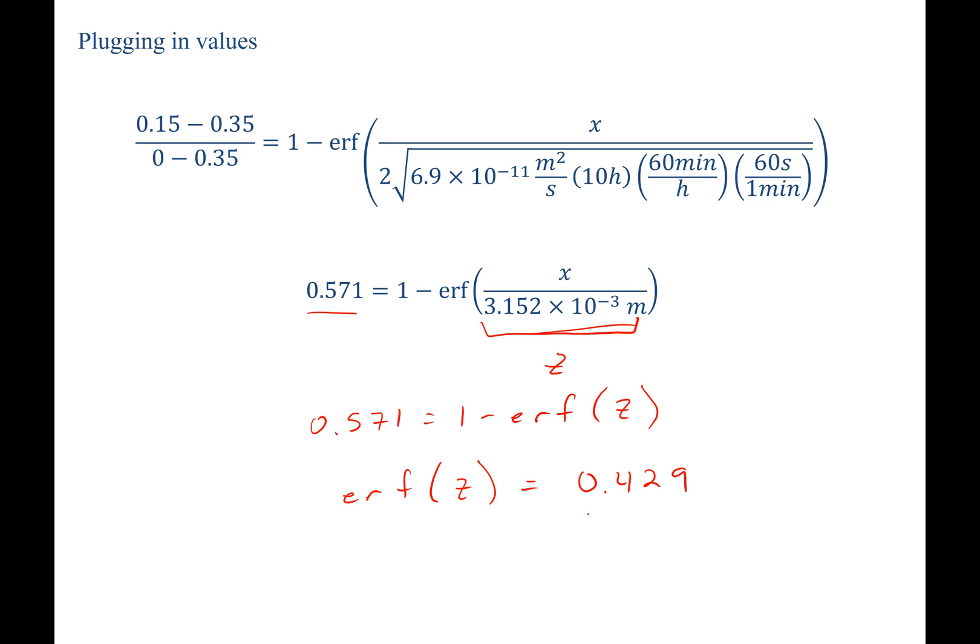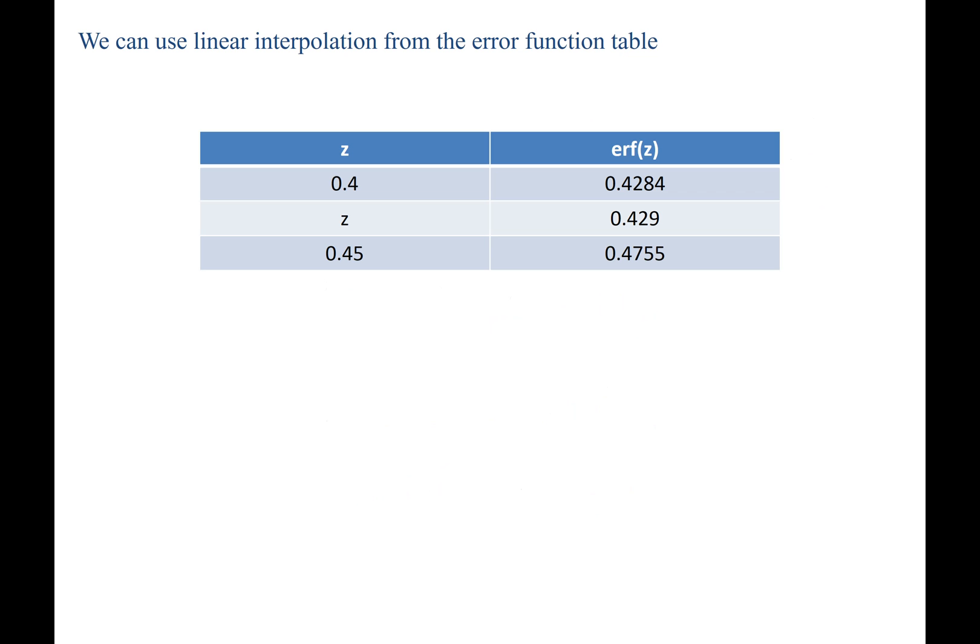Therefore, now that we know what the error function of z is, we can look up using an error function table what the value of z is. Turning to our table, we see the following. Here's our error function of z value we just solved for. Unfortunately, it doesn't match either of the error function z values that are closest to it in the table. Therefore, we're going to have to do a linear interpolation.